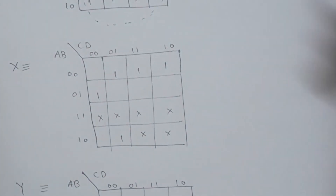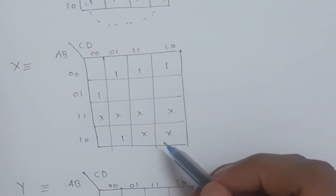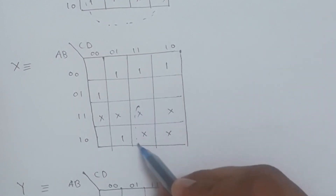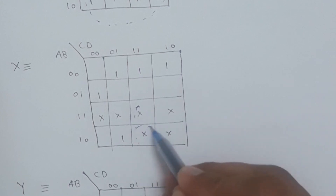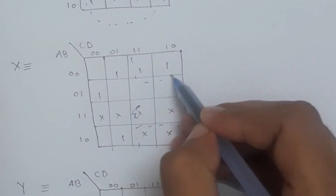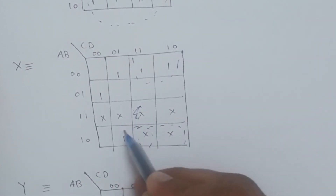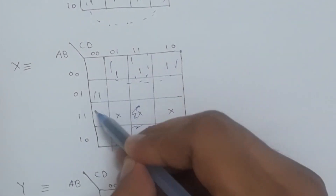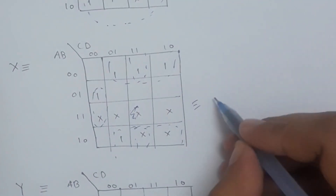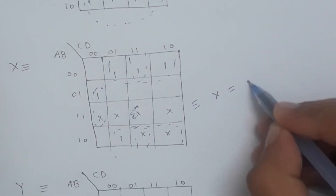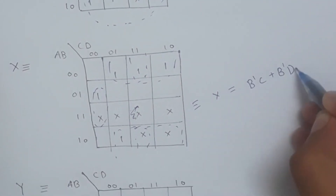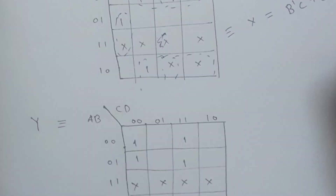Now here is the K-map of X. We can see two quadruples and one additional grouping. Therefore, the minimized expression for X is: B'C + B'D + BC'D.